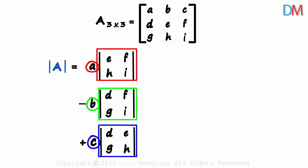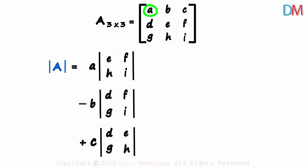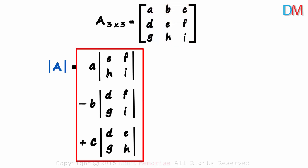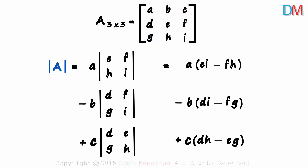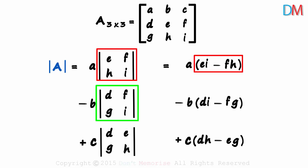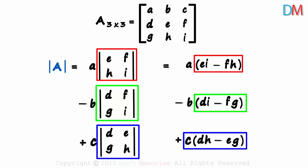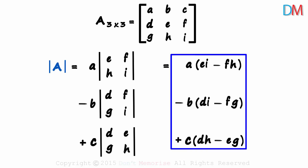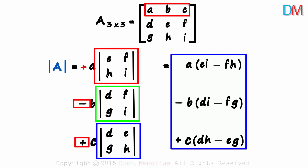This may look difficult, but it isn't if you remember: whatever element you take, exclude its row and its column and multiply it with the determinant of what remains. Expanding further, this determinant equals EI minus FH, this one equals DI minus FG, and this one equals DH minus EG. This is the formula for the determinant of a 3 by 3 matrix — first row: plus, minus, plus, multiplied with their respective determinants.